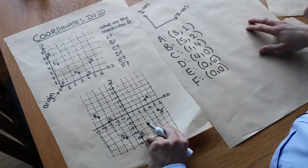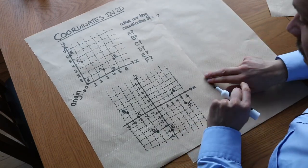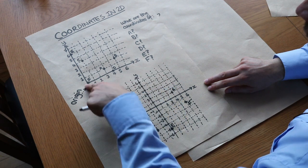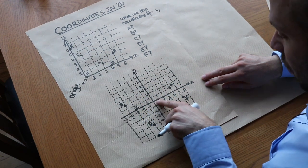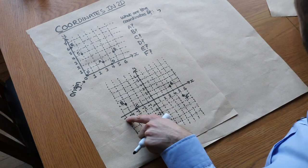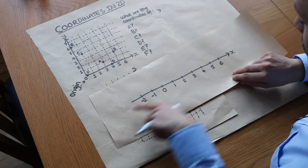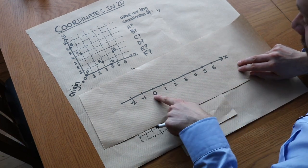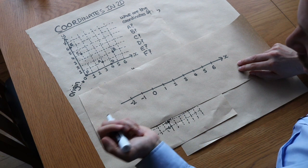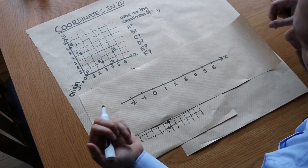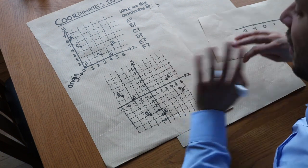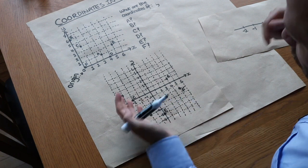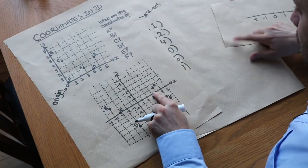Now, where it gets slightly harder is when we have to think about negative coordinates as well. Before, I only had positive values on the x and y-axis, but now we've got the negative part of the number line too. Just like with a one-dimensional number line where you can go below zero — like a temperature of minus two Celsius — exactly the same principle applies to 2D coordinates.